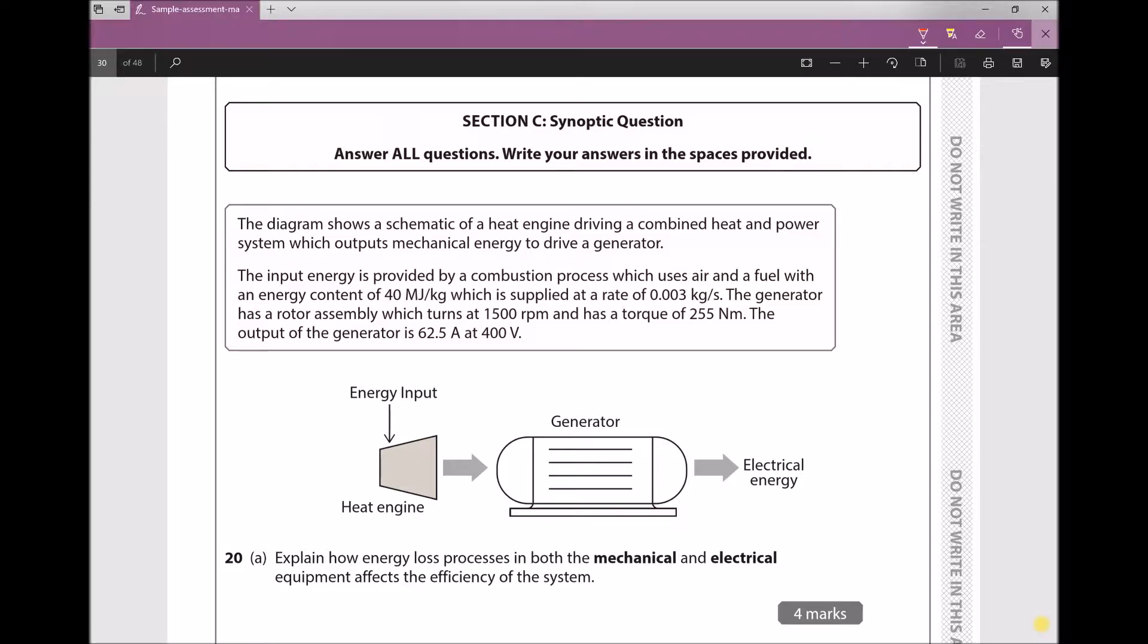We have quite a lot of information, so I'm going to begin by making a note of some of those things. First, the input energy is provided by a combustion process which uses air and a fuel with an energy content of 40 megajoules per kilogram. That 40 megajoules per kilogram is the calorific value, CV. If we were to burn 1 kilogram of the fuel, it would release 40 megajoules of energy. The mass flow rate is 0.003 kilograms per second.